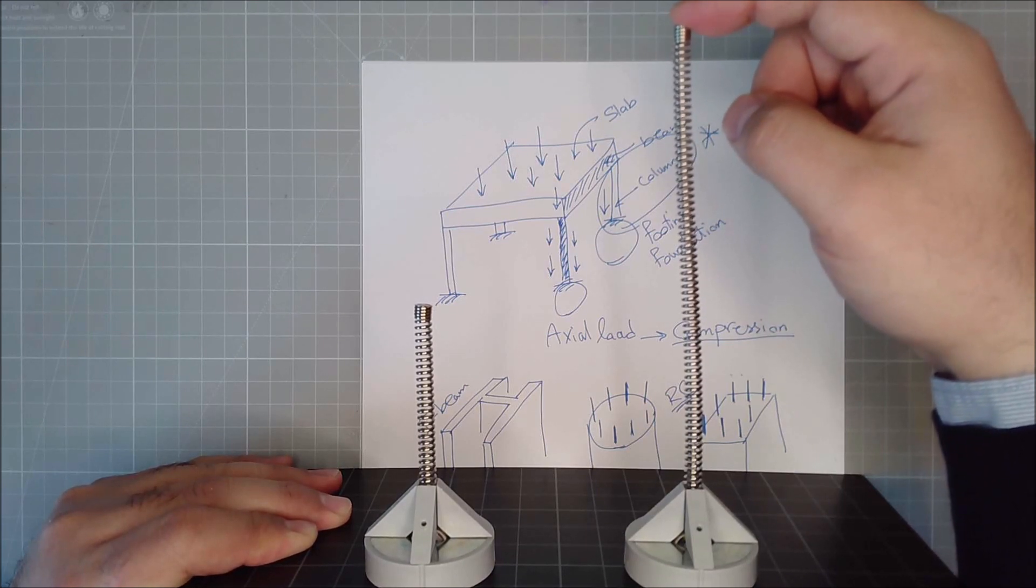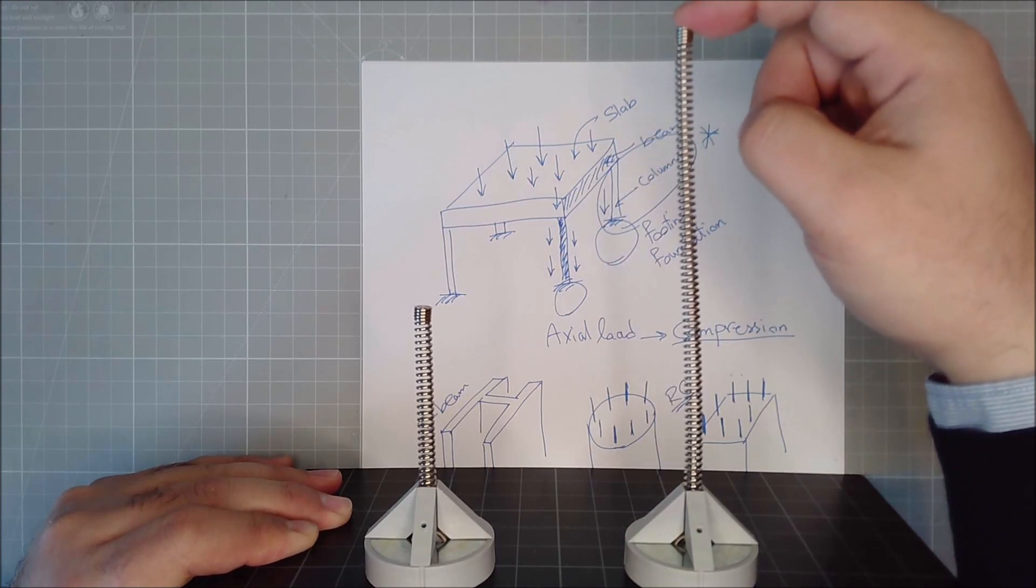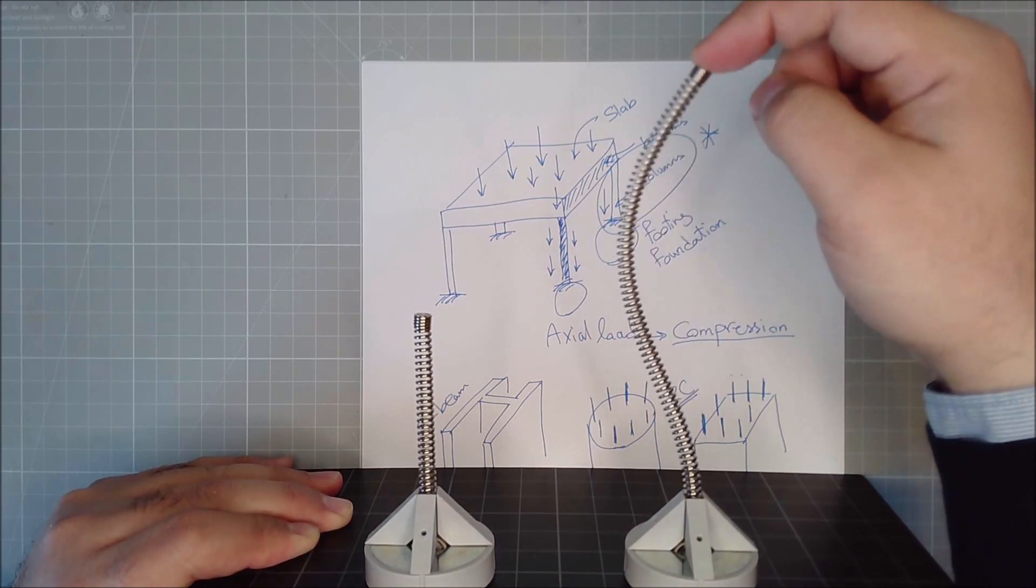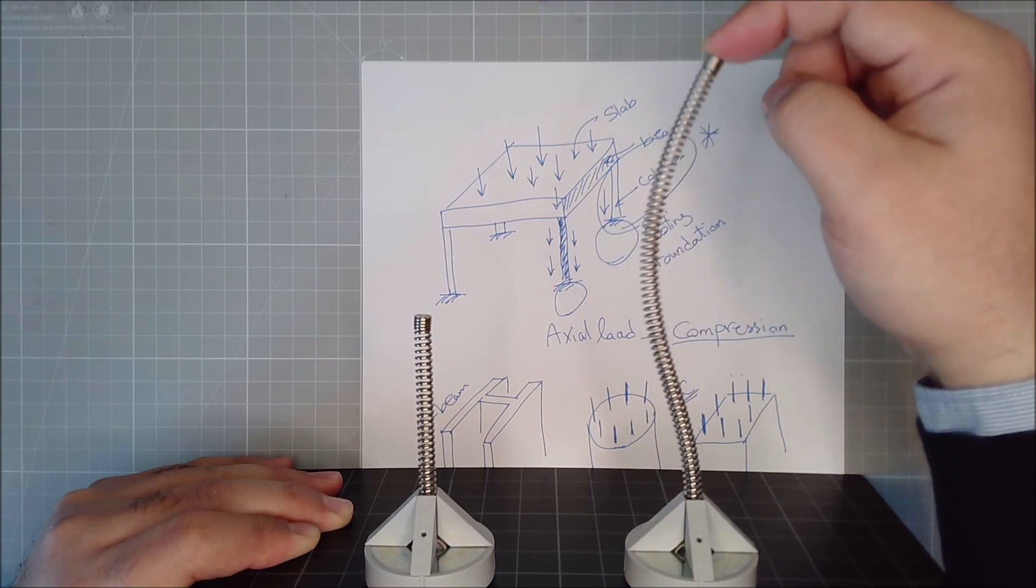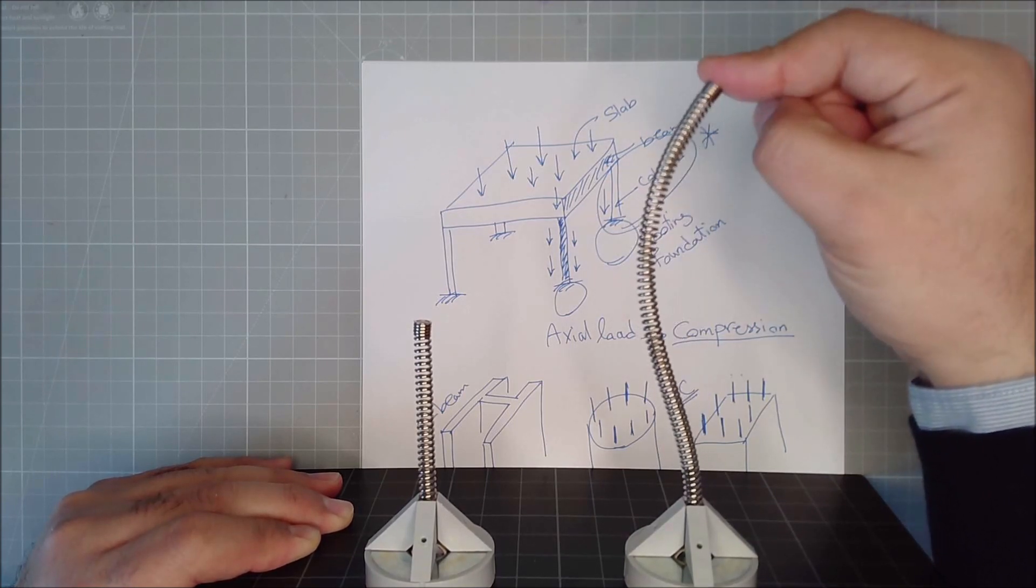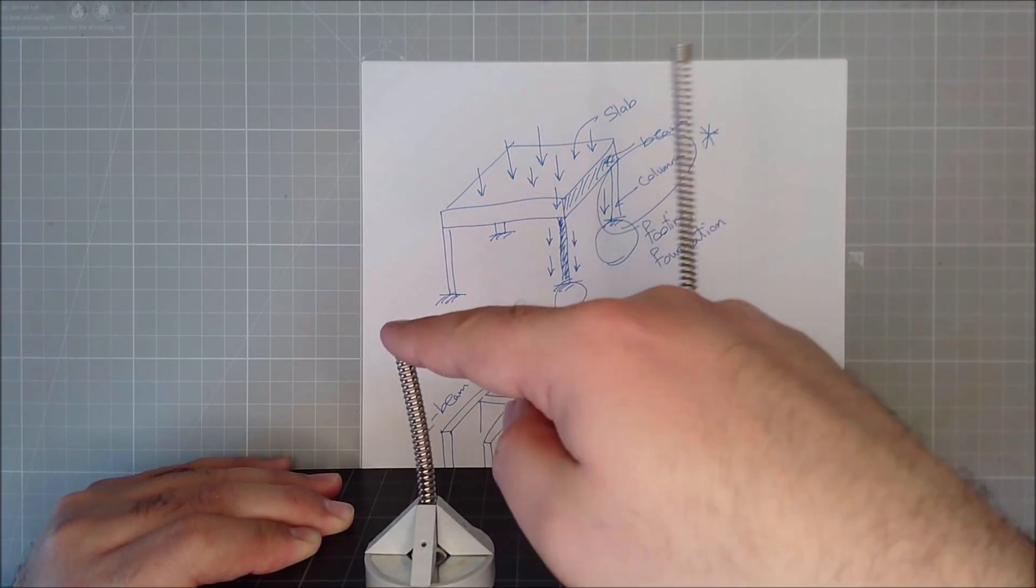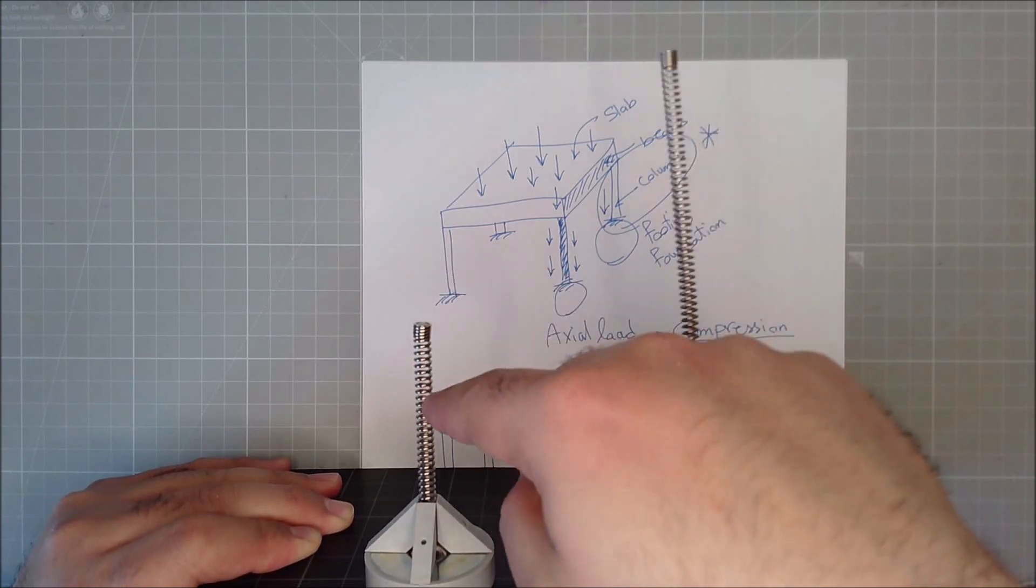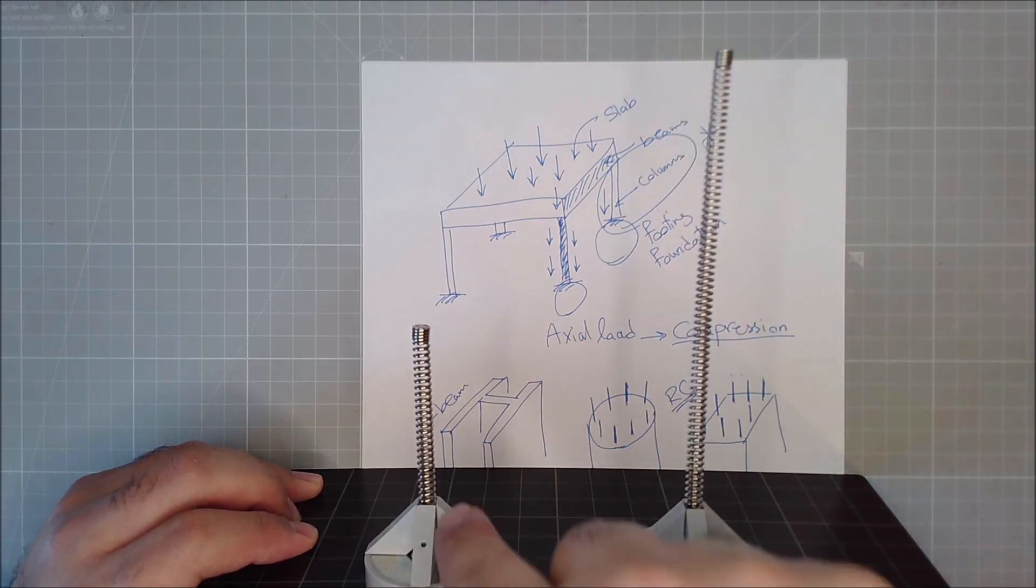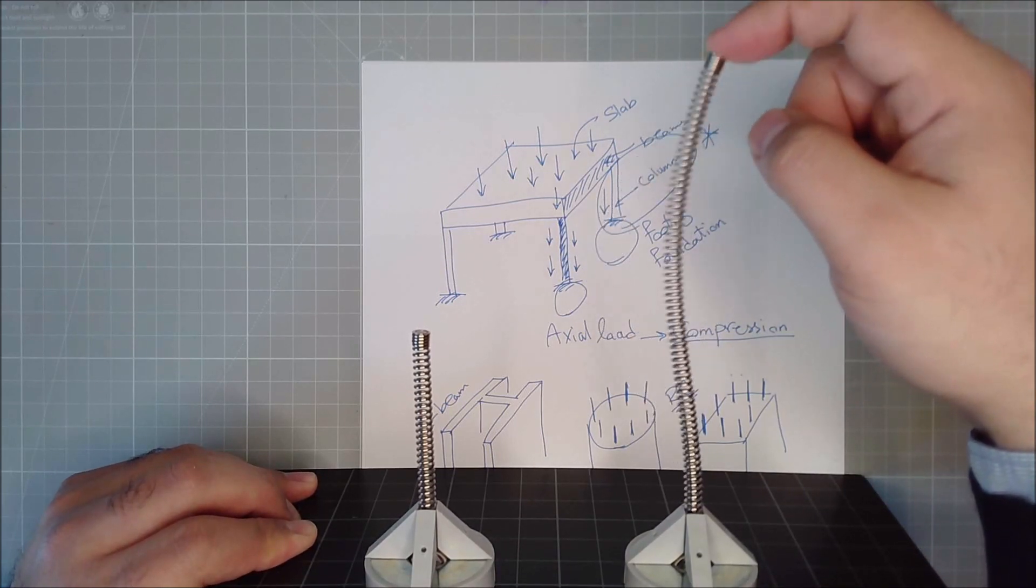But imagine in your building, you're applying some load, and suddenly the column goes like this. For sure you have problems, and that floor might fail. But we haven't reached the yielding, which was the failure point. This phenomenon, which happens in long and slender columns, is called buckling. This sudden lateral deflection is called buckling. And it usually happens in long and slender columns, while in short and stocky columns, they don't care. They only fail due to yielding. So, whenever the yielding stress is reached, this column fails. But this column can either fail due to yielding, or it can fail due to buckling.